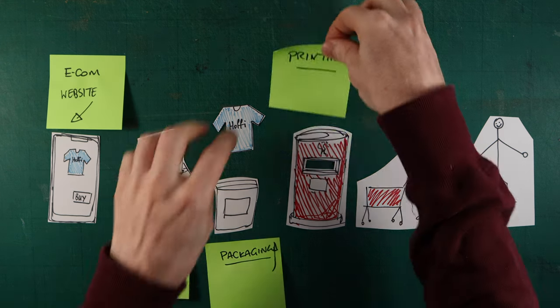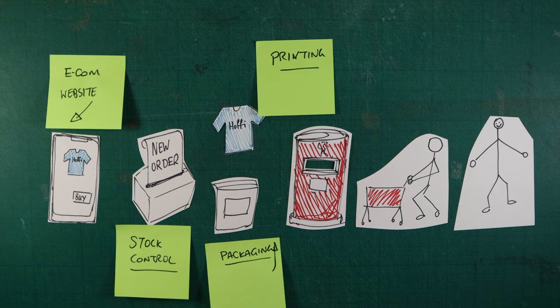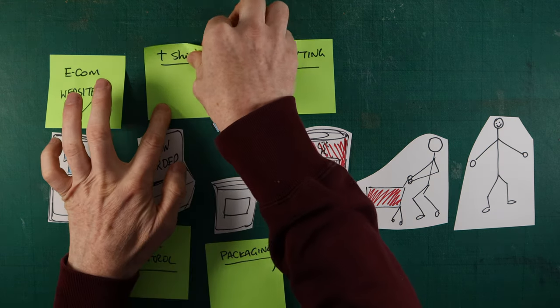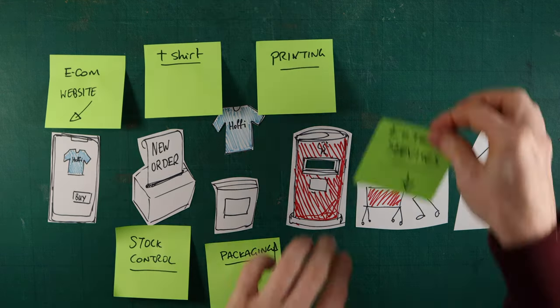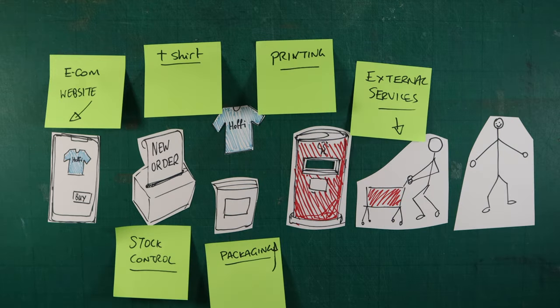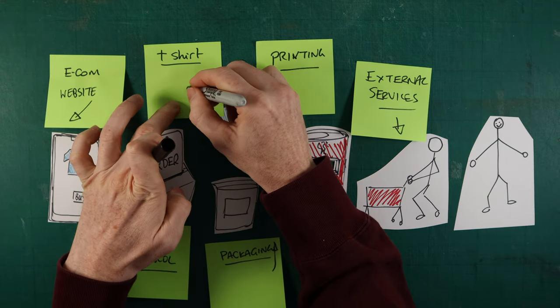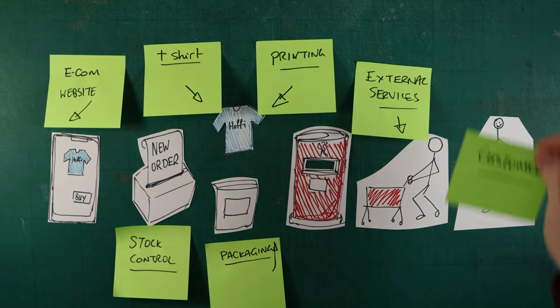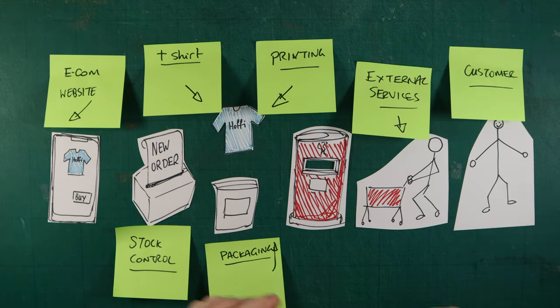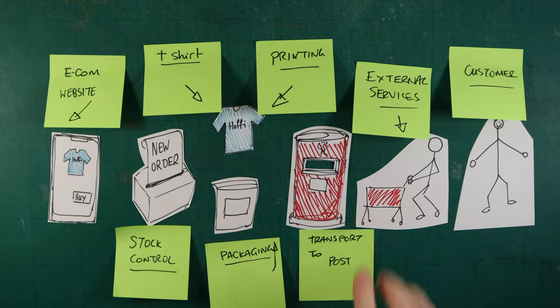Previously, the t-shirt has been sourced and printed ready to be packed and posted. We then move on to an external service which fulfills the final part of the journey, this being the delivery of the t-shirt. Finally, we have the hopefully happy customer opening up the packaging and wearing the t-shirt.